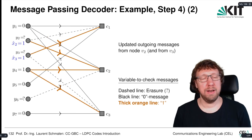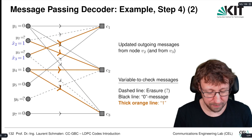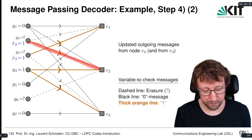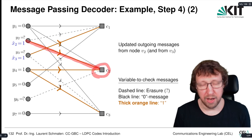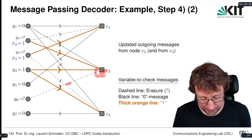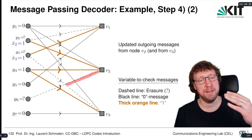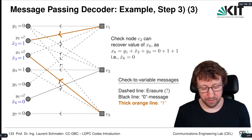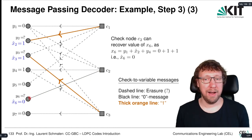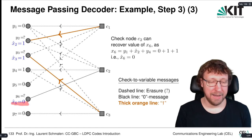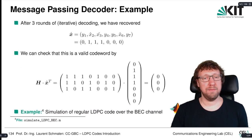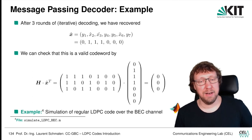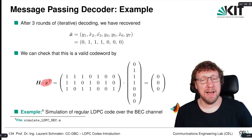Now we do another update of the variable nodes. Variable node X2 sends a one along its edge to check node C2. Now we can recover from C2: we cover one edge, the incoming messages are zero, one, and one, so the outgoing message must be zero. We have recovered the final erased position X̂₆ equals zero. All codeword positions are recovered in three rounds of decoding. We can verify this is a valid codeword because H times x̂ equals zero.